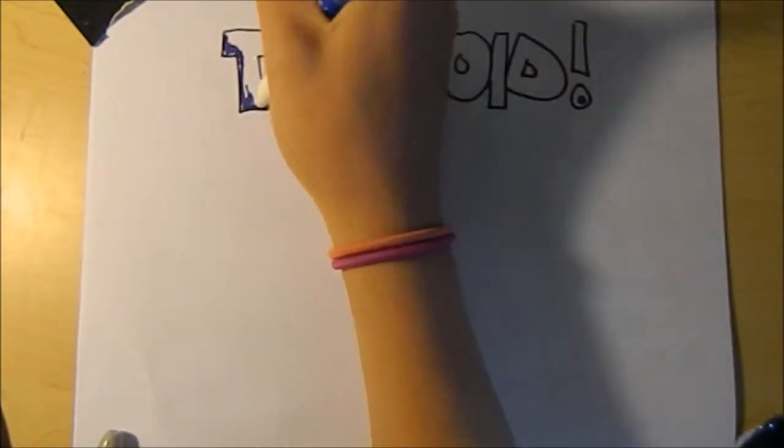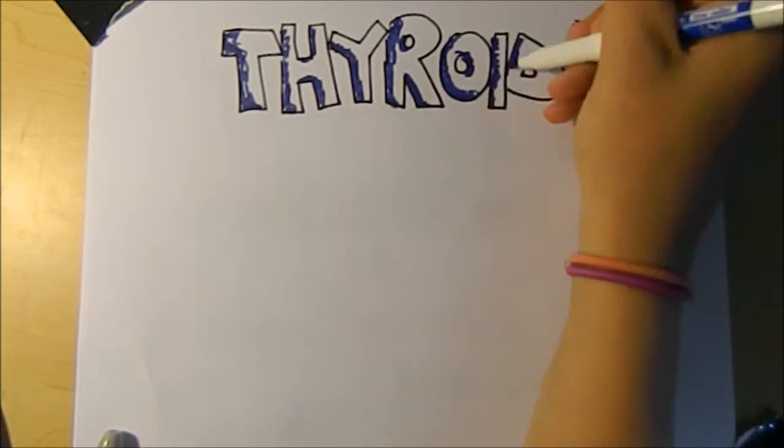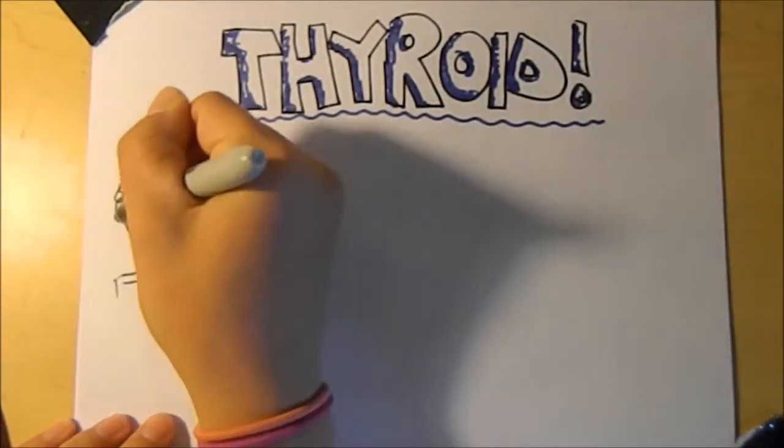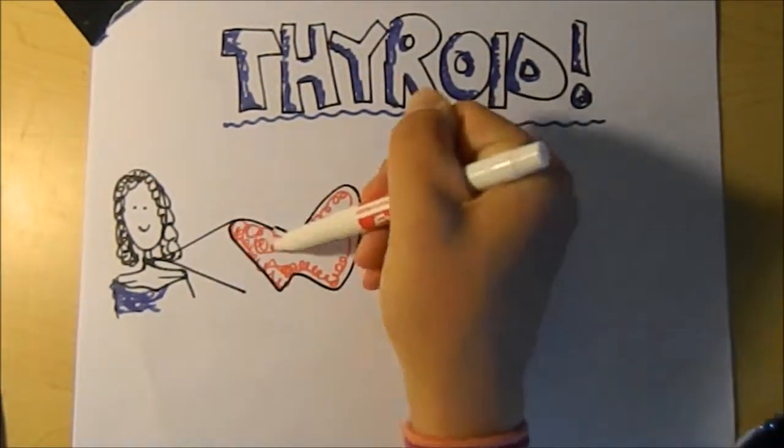Before we look at the thyroid hormone mechanism of action, we must look at the thyroid. This endocrine gland is located in the neck behind the thyroid cartilage and is shaped like a butterfly.